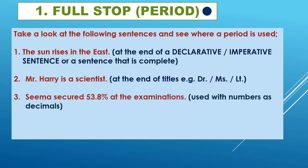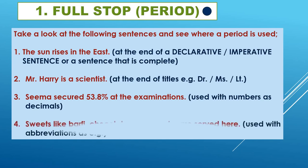Look at the third example. There is a dot at the end of the sentence, but there is also a dot between numbers: 53.8 percent. That point is also a full stop indicating a decimal number. The fourth example shows 'Sweets like Burfi, chocolate mousse, etc.' — here 'etcetera' is made into a short form and a dot is used to indicate it is an abbreviation.